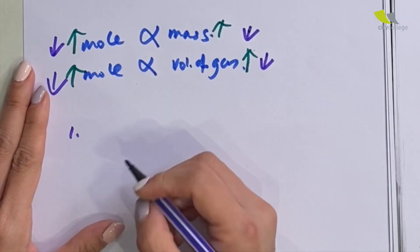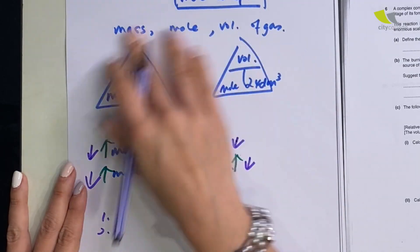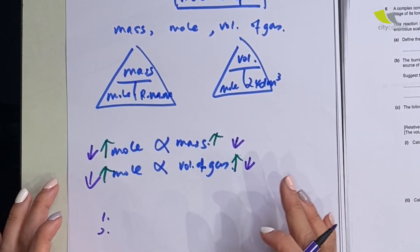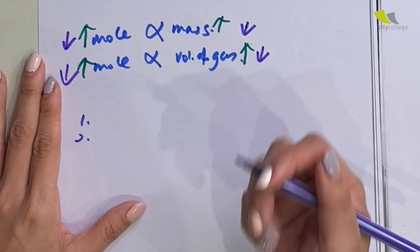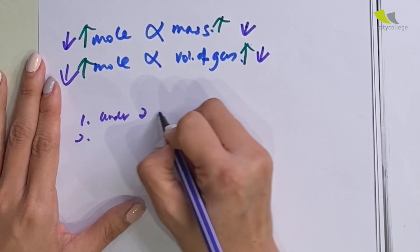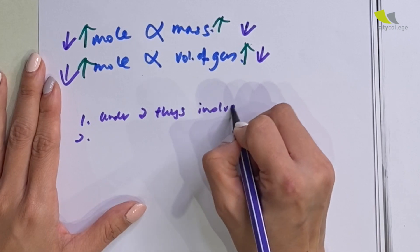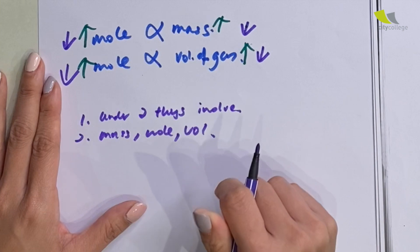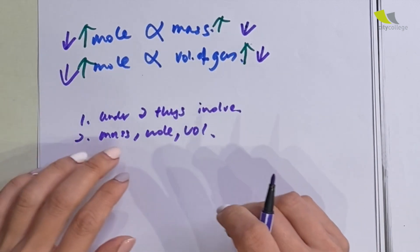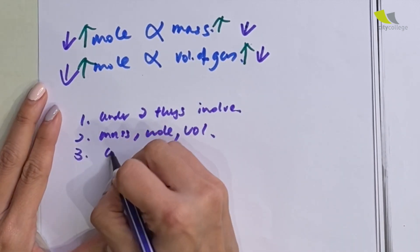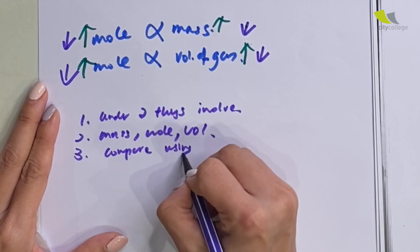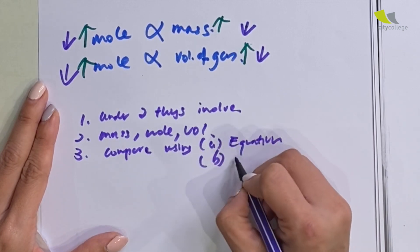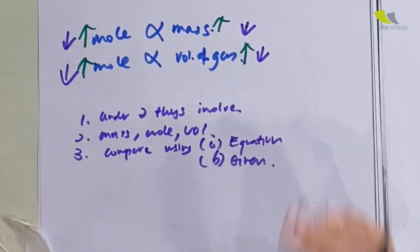In many practice problems, I came up with three simple steps to help you solve questions more effectively and faster. The first step is: underline the two things involved. The second step: write down whether it's mass, mole, or volume — look at the question and ask yourself what they are referring to. Lastly, compare using first the equation, then compare using the given values.